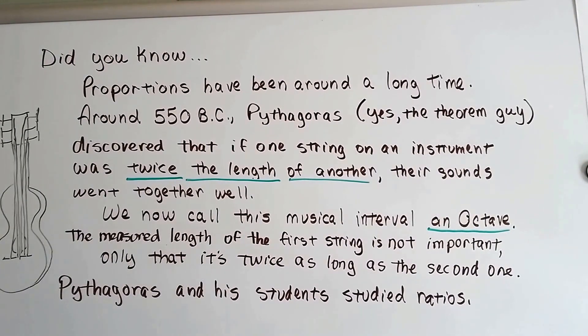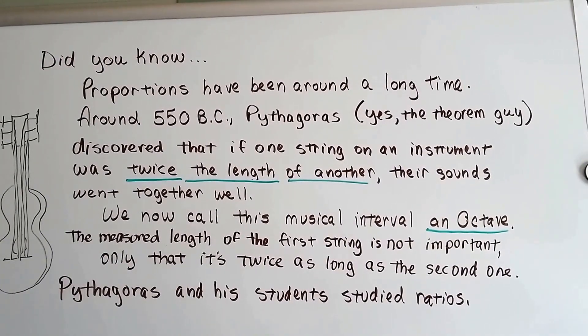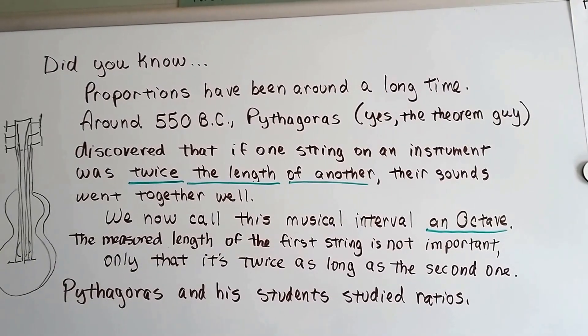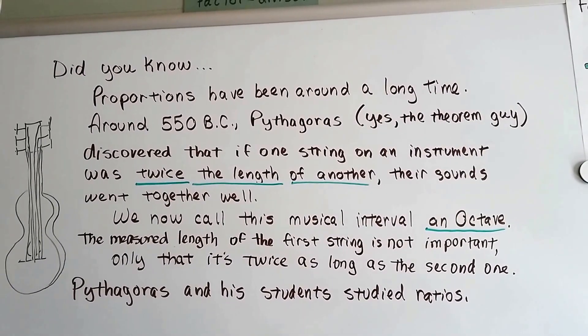And now we call this musical interval an octave. The measured length of the first string is not important, only that it's twice as long as the second one. Pythagoras and his students studied ratios.